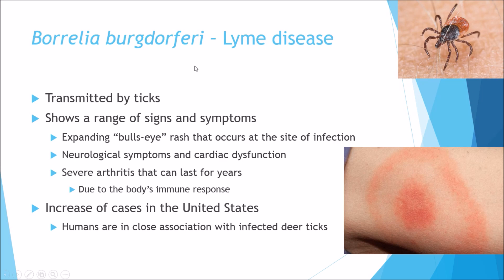Now we're going to talk about Borrelia burgdorferi, the causative agent for Lyme disease. It is transmitted by ticks — when they are infected and they bite you, they can transmit Lyme disease as well as many other diseases. One of the main signs and symptoms is a distinctive red bullseye rash, literally like a bullseye with a red circle and a dartboard pattern around it. You can also get neurological symptoms and cardiac dysfunction as it advances to latent stages, and one of the most severe symptoms is severe arthritis which can last for years, caused by an overwhelming immune response that cripples the body. In the USA, where there is close contact between deer and humans, there is a higher rate of infection due to the tick life cycle.